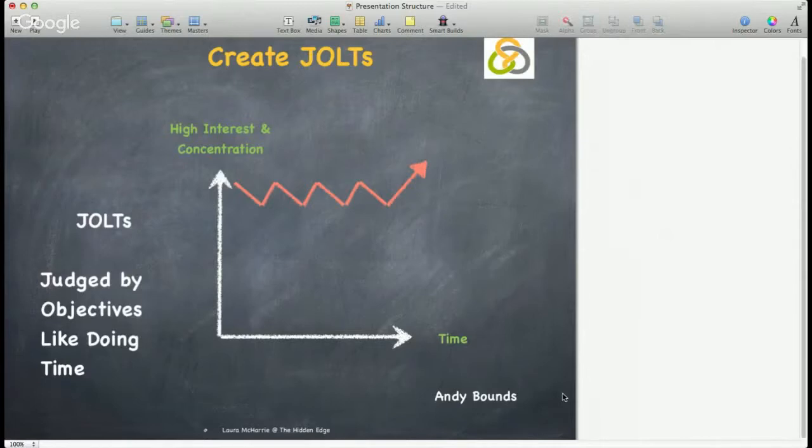I've chosen Andy Bounds' JOLTS because I think it's a really useful mnemonic. And JOLTS stands for judged by, objectives, like doing, and the time frame.